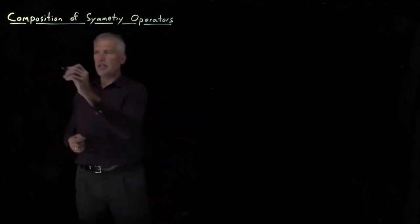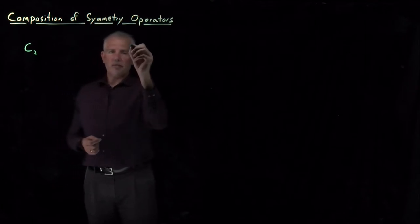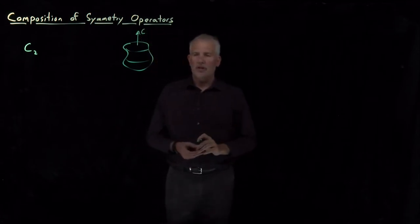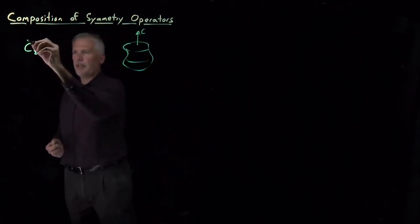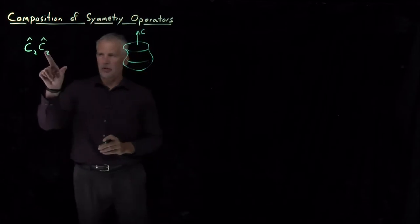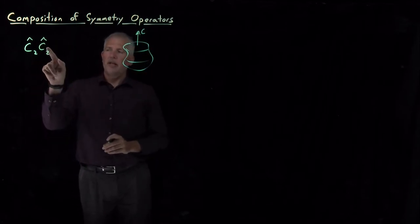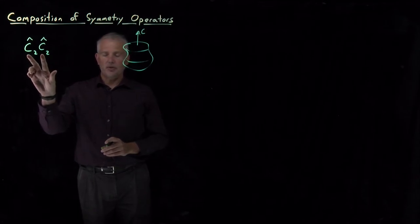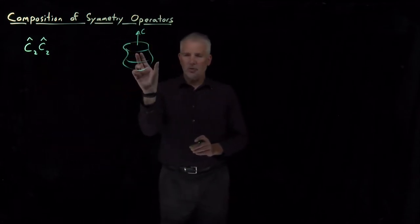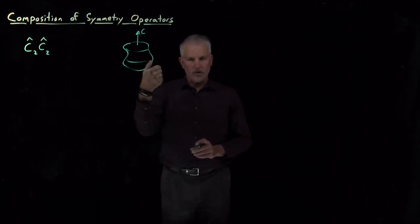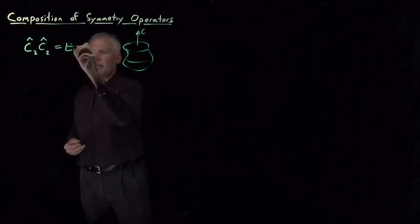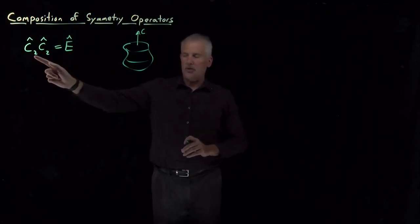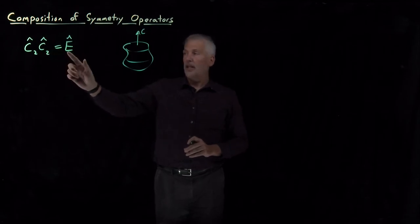In some cases, composition of these operators is easy. Imagine an object with a rotational axis. If we do a C2 operation followed by another C2 operation — remembering that operators act to their right — we're doing two C2 operations one after the other. A C2 operation is rotation by half a full circle, so rotating by half and then the rest brings us back to the start. Two half rotations equal a full rotation, which is exactly the same as doing nothing.